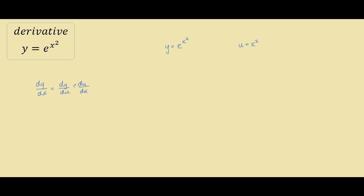You can think of the du's as cancelling out, so we are left with dy/dx equals dy/dx. On our left hand side we basically have y equals e to the u, because we let u equal x squared.